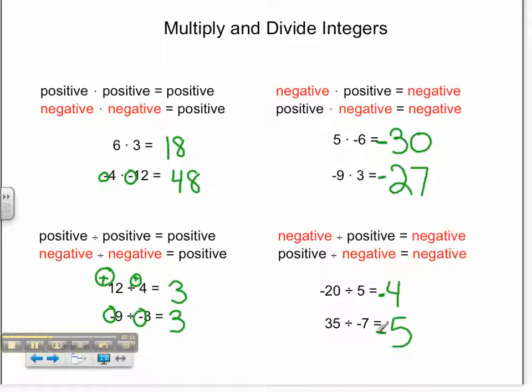That is a quick and simple way of multiplying and dividing positive and negative integers.